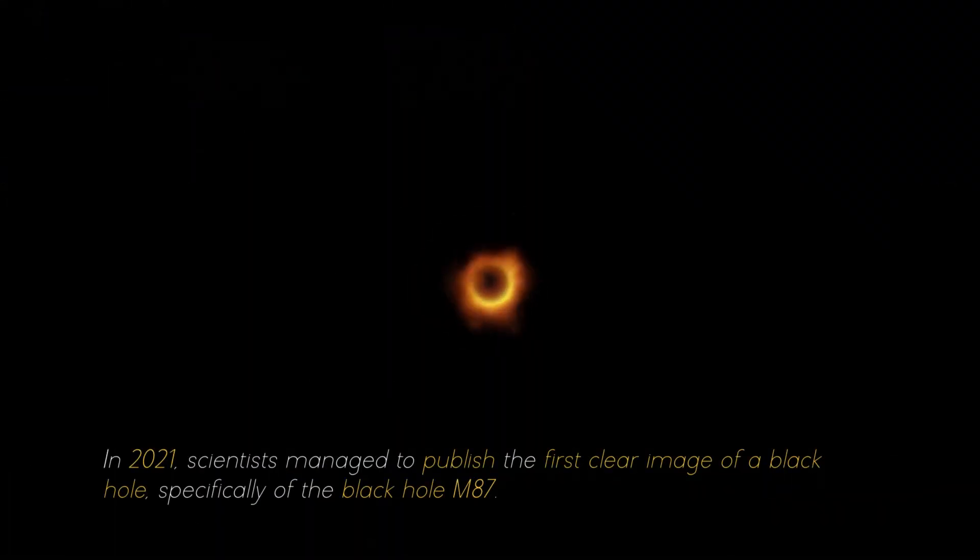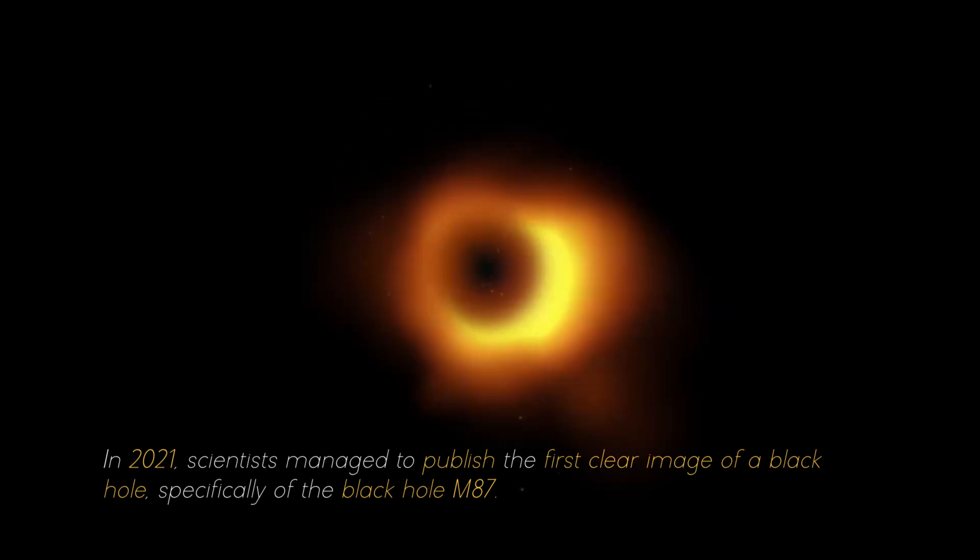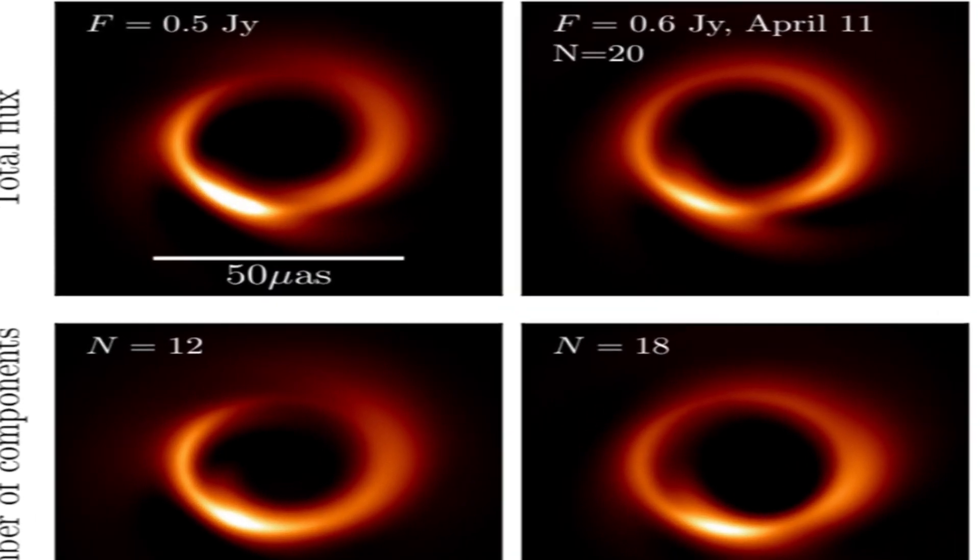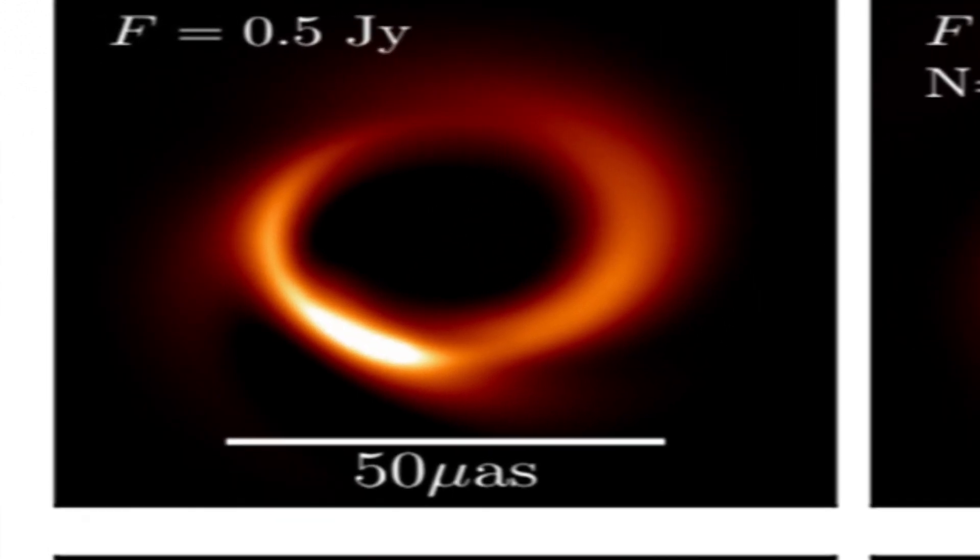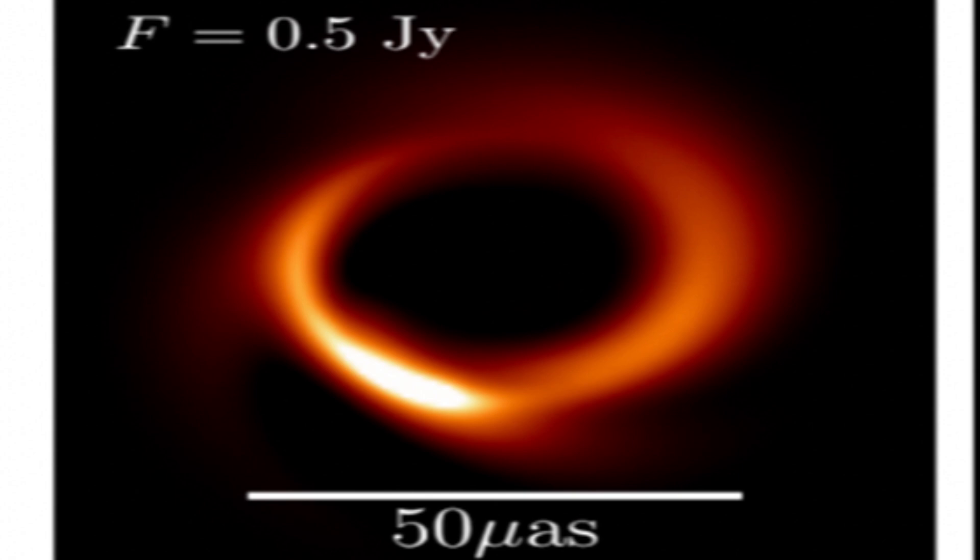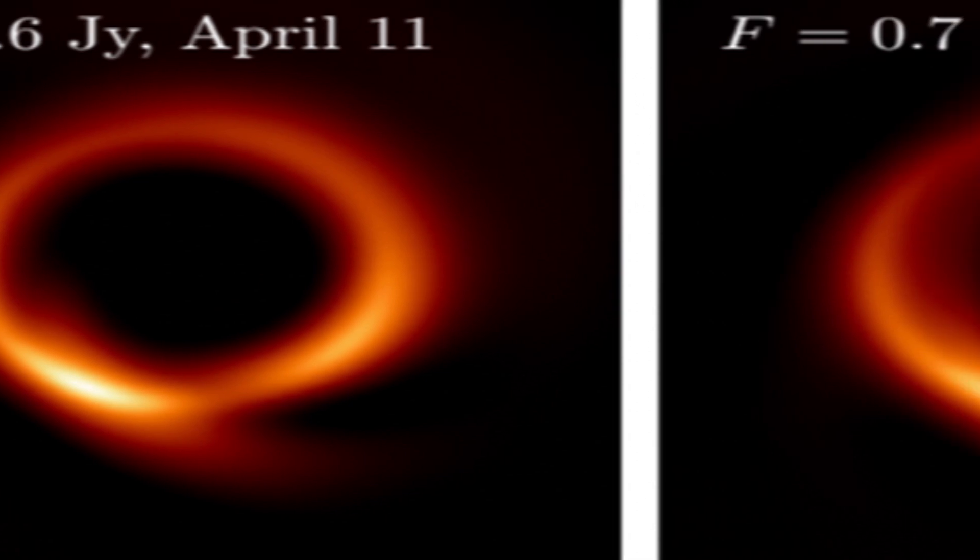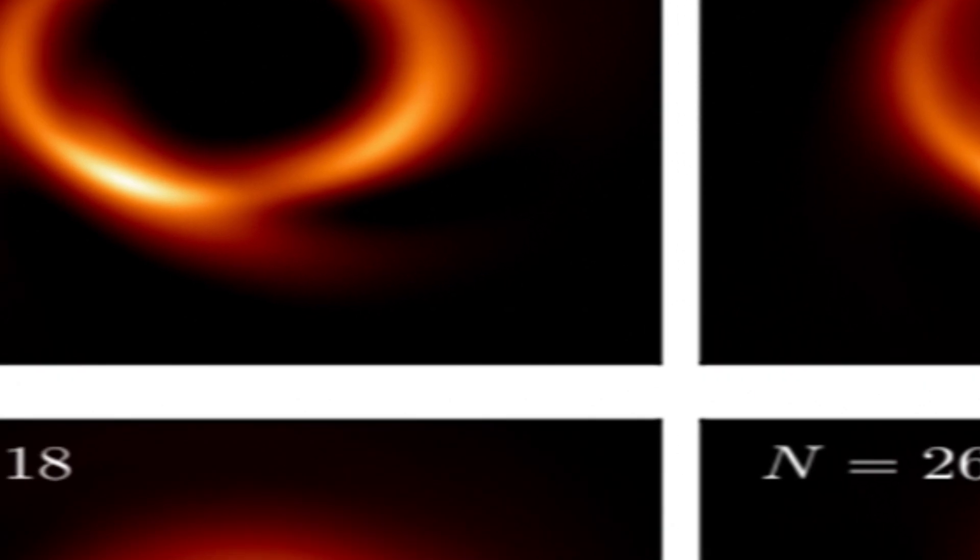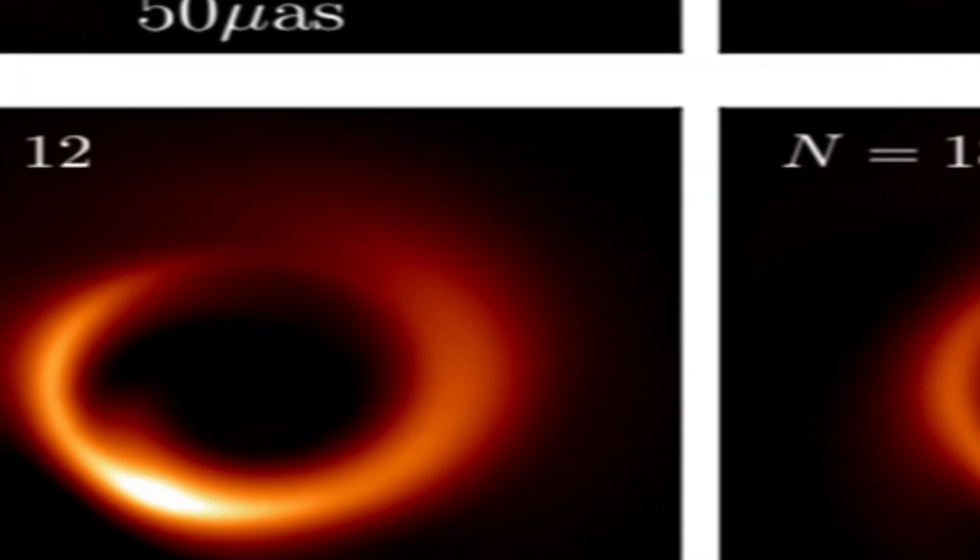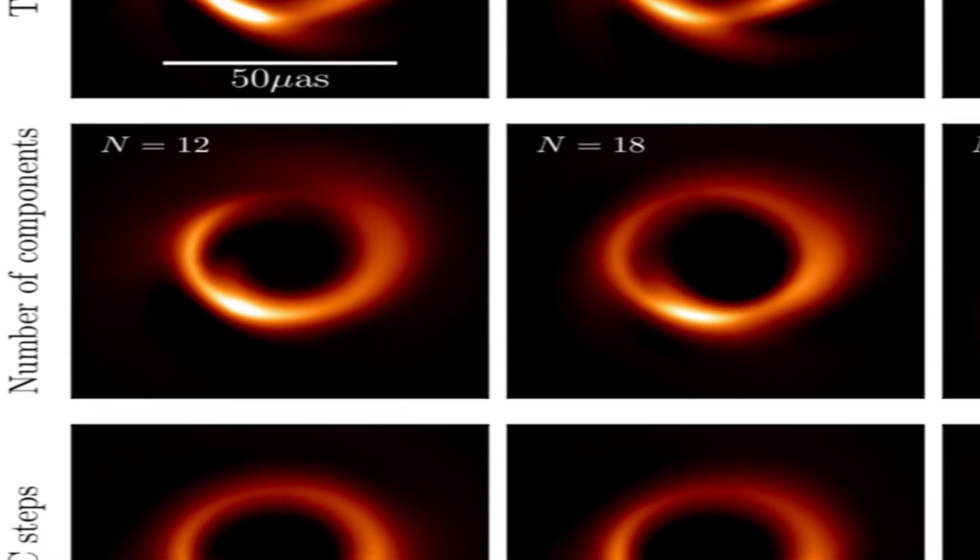In 2021, scientists managed to publish the first clear image of a black hole, specifically of the black hole M87. For several consecutive nights, photographs of the black hole were taken, and with each image researchers collected more evidence about it. It was necessary to combine the individual photographs to obtain a complete image that filled in all the gaps. In this way, the scientists discovered that black holes are not just simply an empty hole in the void, as many people believed. In reality, they are much more complex.